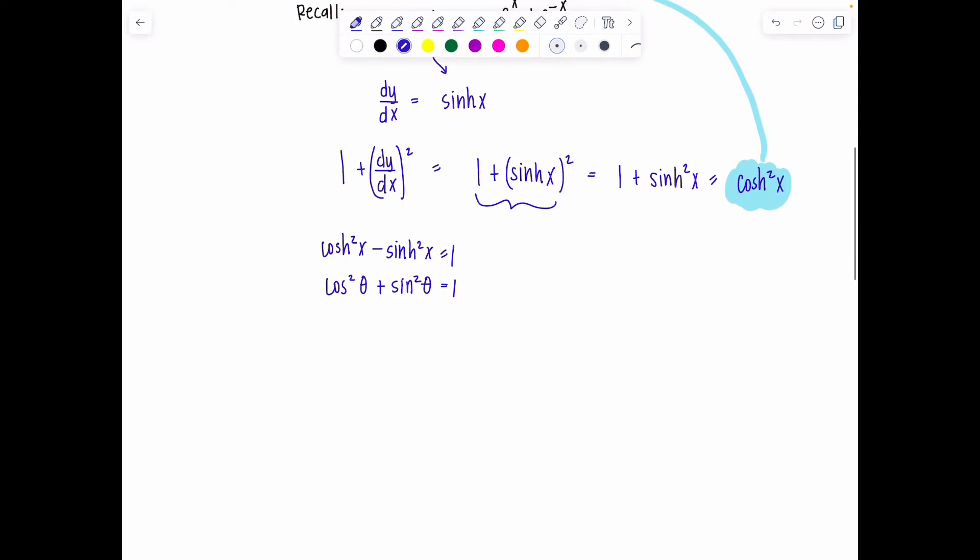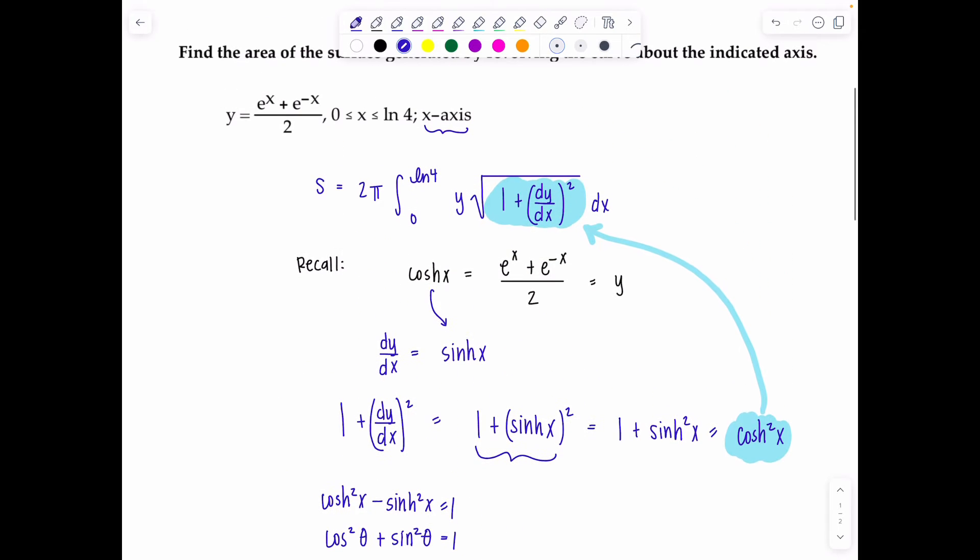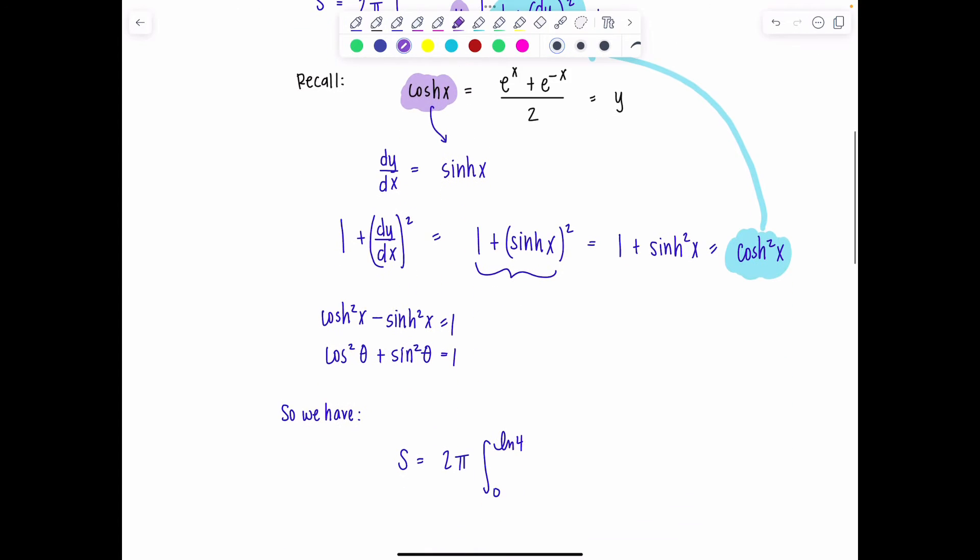Let's rewrite our integral. So we have surface area equals 2π integral 0 to ln of 4. Notice here, I told you we were going to have to replace this y to be defined in terms of x. But I don't have to actually write out e to the x plus e to the negative x over 2. I know that that's equal to cosh x. So that's exactly what I'm going to replace that with right now. We have cosh x times the square root of cosh squared x dx.